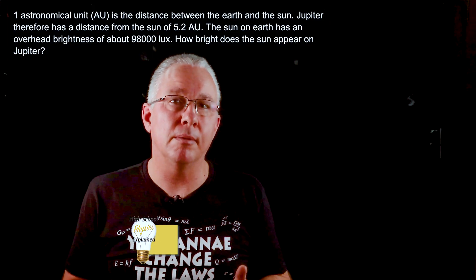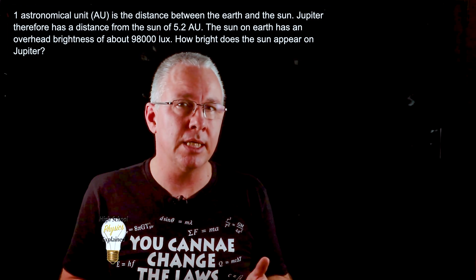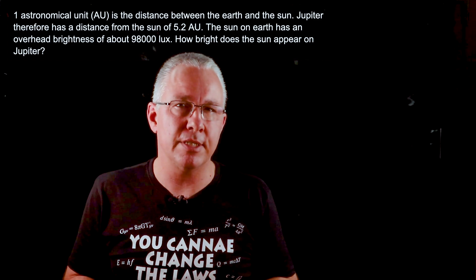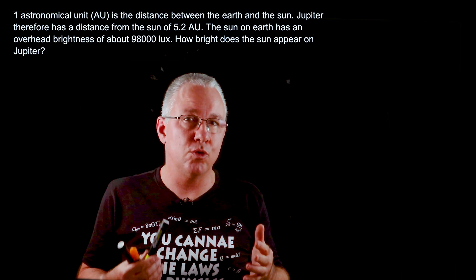So here we have an inverse square problem and we are told the various distances of the Earth and Jupiter and we know the brightness of the Sun, at least overhead brightness of the Sun. We need to work out the intensity or the brightness of the Sun on Jupiter.